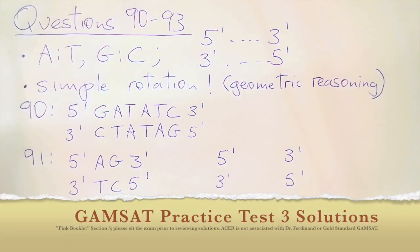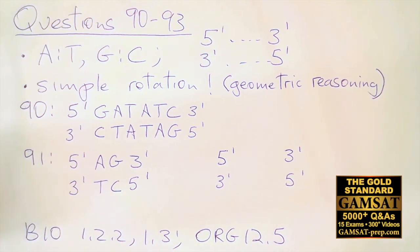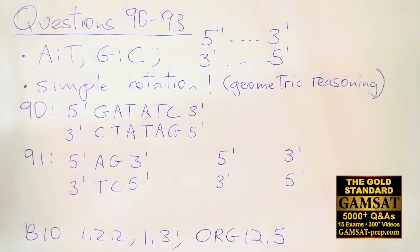Questions 90 to 93 revisit DNA on the exam. In question 66, already discussed in this pink booklet, I covered the ideas of anti-parallel binding, DNA solubility, hydrogen bonding, and stability of the DNA molecule. So I'm not going to discuss any of those again at this point.